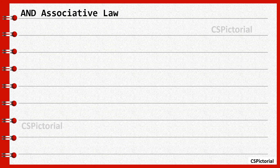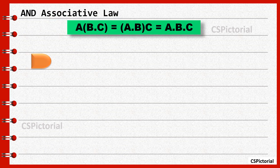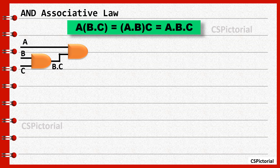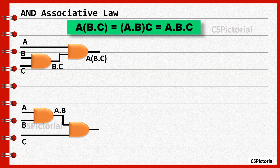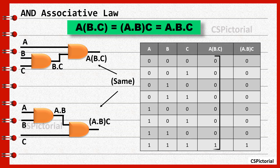AND associative law. In the first case, the inputs B and C are first ANDed and the output B dot C is ANDed with input A. The output A times B dot C is just the same even when the order of inputs changes. The truth table shows similar output values even when the order of inputs changes.